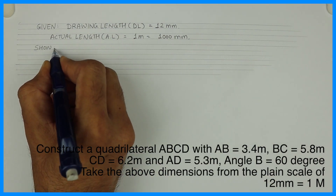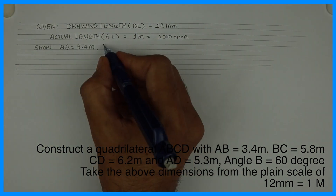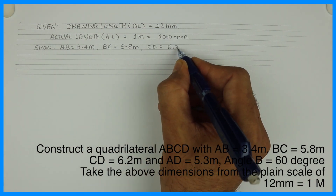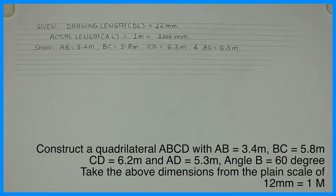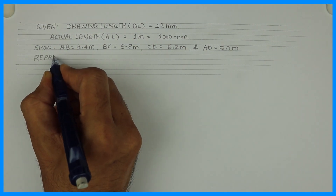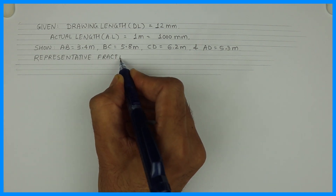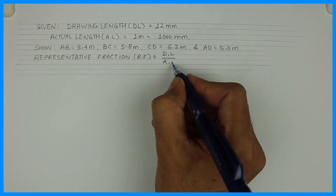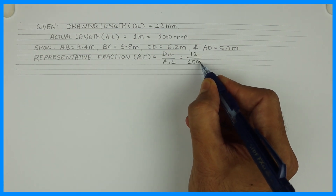We need to show all these dimensions: AB, BC, CD and AD, because with their help we have to draw the quadrilateral. So we need to show all these dimensions. We can write: Representative Fraction equals to drawing length upon actual length. So drawing length is 12mm and actual length is 1000mm.